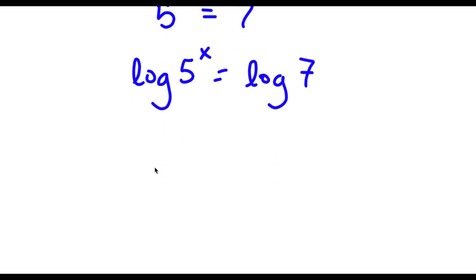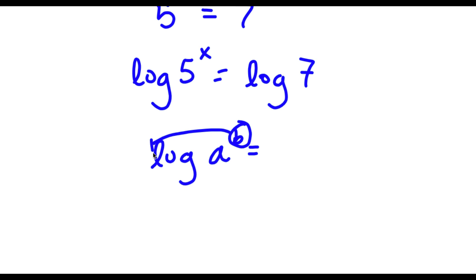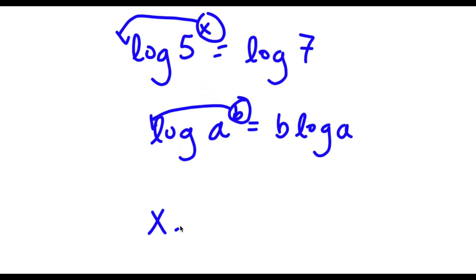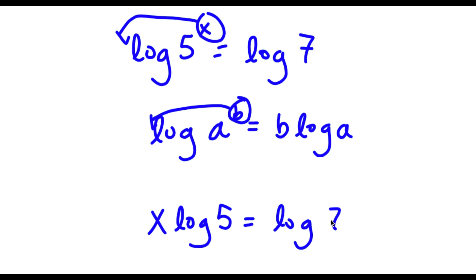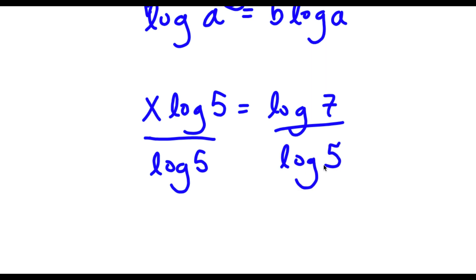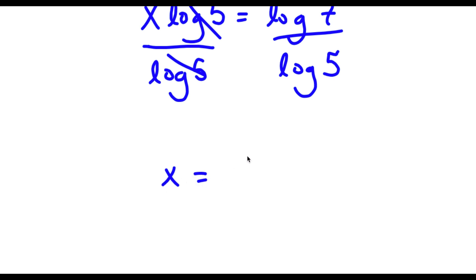An important property of logarithms is that if I have something in the form log a to the power of b, I can move this exponent b to the front, so it equals b times log a. So in this case I can move x to the front, giving x times log 5 is equal to log 7. Now if I divide both sides by log 5, these two cancel out and I'm left with x is equal to log 7 over log 5.